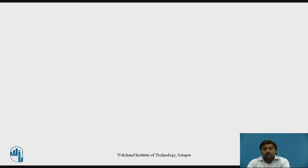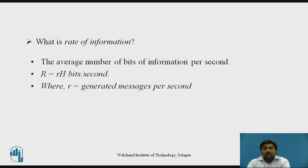Before starting the actual session, let's think about what is meant by rate of information. It is nothing but the average number of bits of information per second in a communication system. We know that the average number of bits required per message is h, that is the entropy. And the system is generating messages at a rate of r messages per second. So the rate of information equals r into h, that is bits per second.